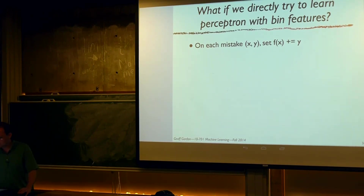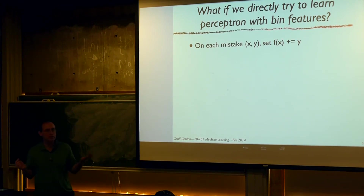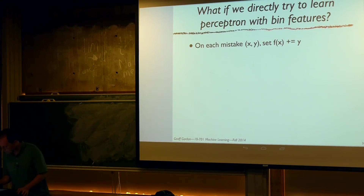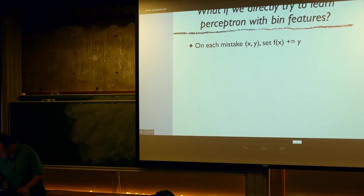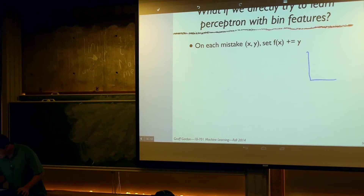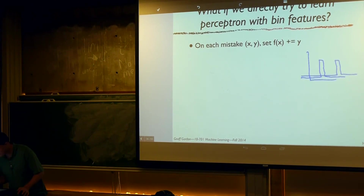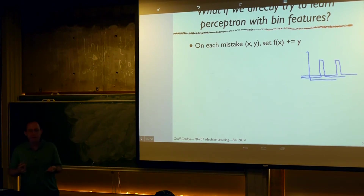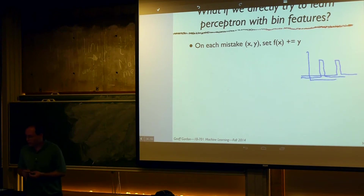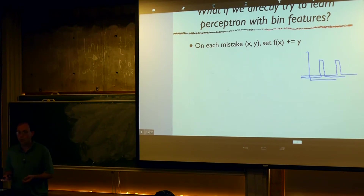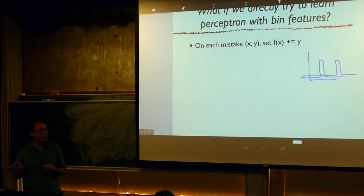What happens if we try to learn the perceptron with these features? Think of this as a feature transform where features look like indicator functions — zero everywhere except inside a tiny bin. In the 31-dimensional example, every example has a single bin set to 1 and the rest to 0. So on every mistake, we're altering the value in just a single bin.